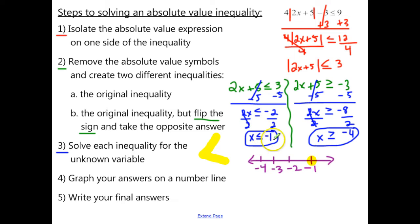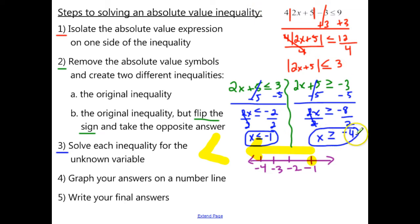Now let's look at our second answer: x is greater than or equal to negative 4. The 'or equal to' tells us it's a solid circle. The alligator mouth is open towards x, so we want all the numbers bigger than negative 4, which are all the numbers going to the right.